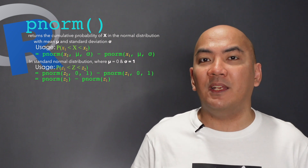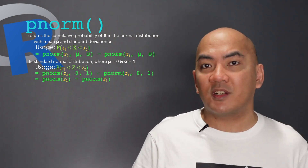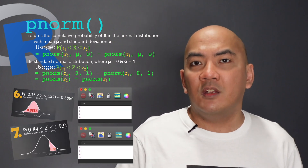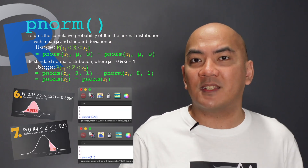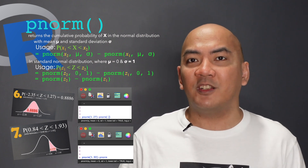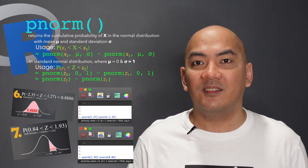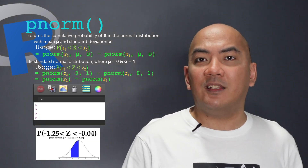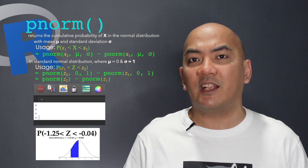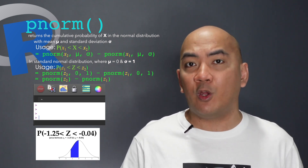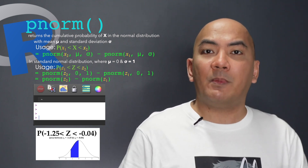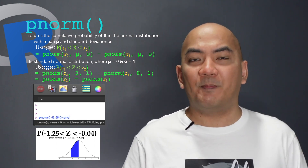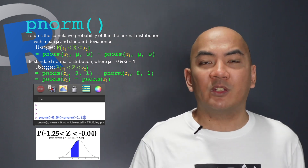And if you're asked to find the probability between two standardized scores, Z1 and Z2 where Z2 is greater than Z1, find the cumulative probability of Z2 first and subtract the cumulative probability of Z1. So if you're asked to find the probability that Z is between -1.25 and -0.04, just type pnorm(-0.04) minus pnorm(-1.25).